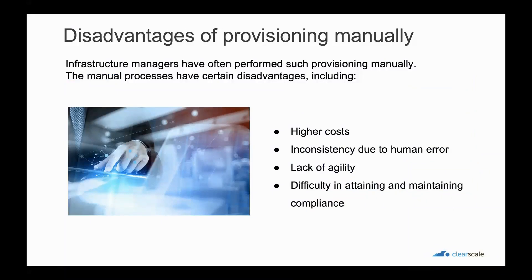IT managers have often performed infrastructure provisioning manually. Manual processes have certain disadvantages including higher costs because they require human capital that could otherwise go toward more important business needs, inconsistency due to human error leading to deviations from configuration standards, lack of agility by limiting the speed at which your organization can release new versions of services, and difficulty attaining and maintaining compliance due to the absence of repeatable processes. IaC addresses these deficiencies by bringing automation to the provisioning process.